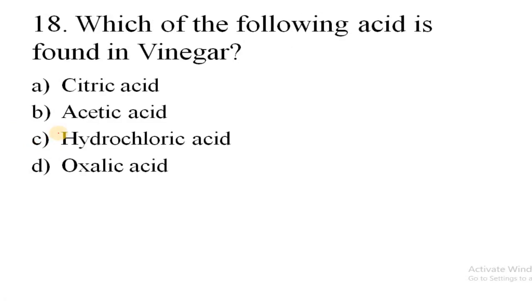Let's go to the next question. Which one of the following acids is found in vinegar? And the correct answer is acetic acid, that is B.